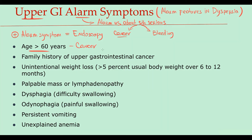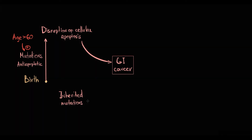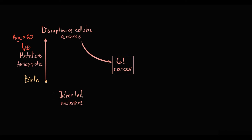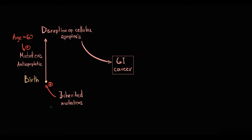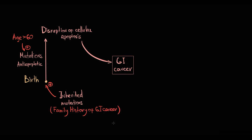Moreover, some mutations can be inherited. So basically from the moment a patient was born, he could already have pro-cancer mutations. In this case it will take a shorter period of time to accumulate enough mutations to disrupt cell apoptosis. So in patients that have a close relative with GI cancer, generally the risk of GI malignancy is higher.